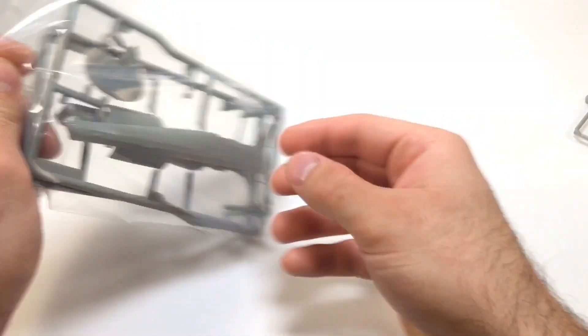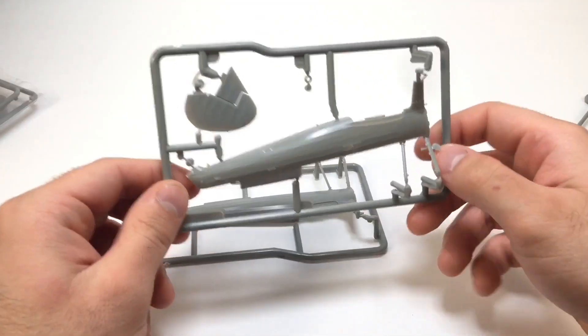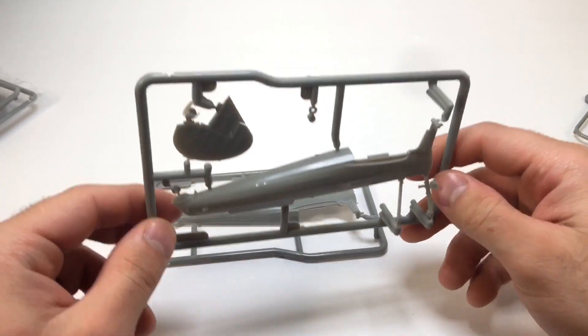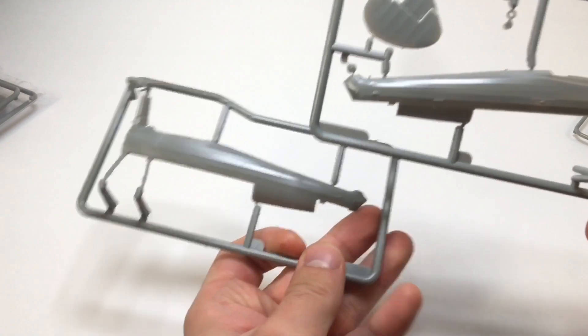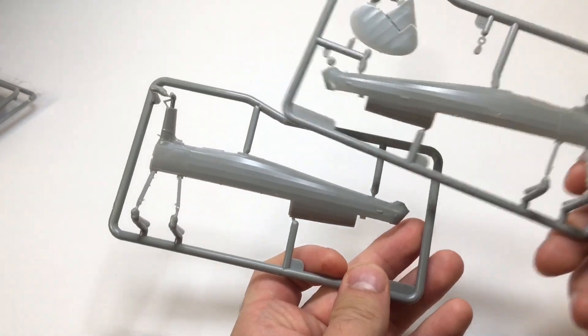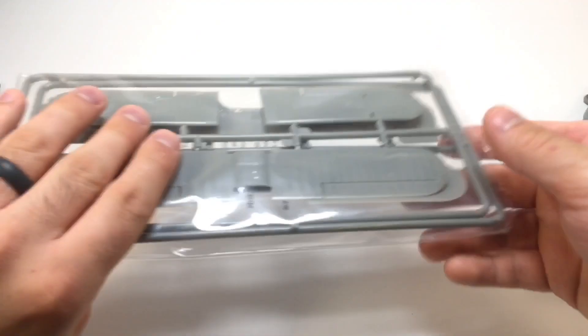Next bag. We got looks like the bottom of the fuselage, the rudder, looks to be the other side of the fuselage to the top.